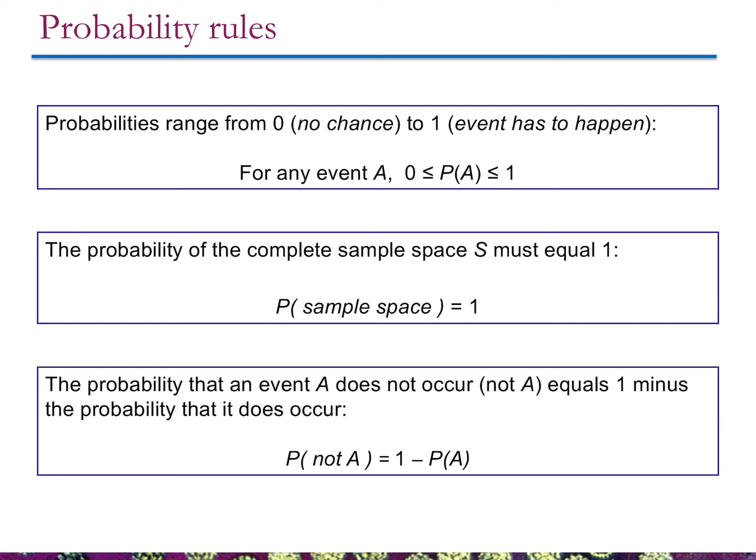The probability of the complete sample space for any event must equal 1. Think about the sample space of sex in humans — male or female. The baby is born and it has to be one sex or the other, so the probability of being male plus the probability of being female adds up to 100%. The probability that an event does not occur is simply 1 minus the probability that it does occur. If the probability of having a male child is 51%, then the probability of not being male — being female — is 100% minus 51%, which is 49%.